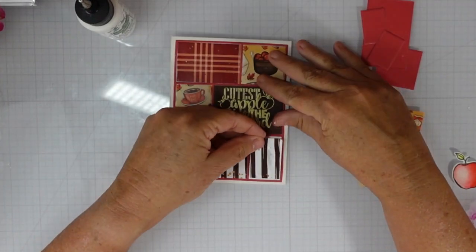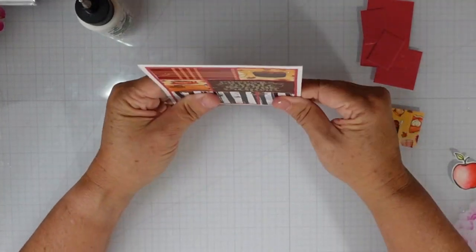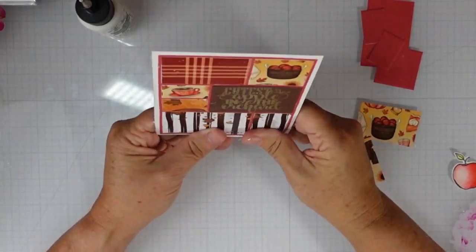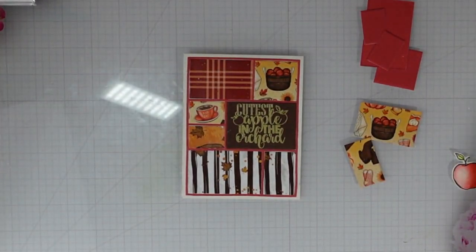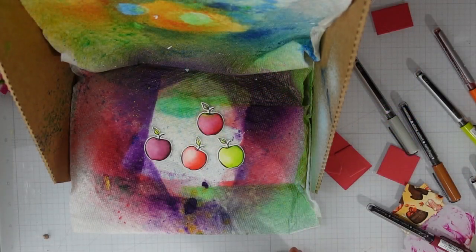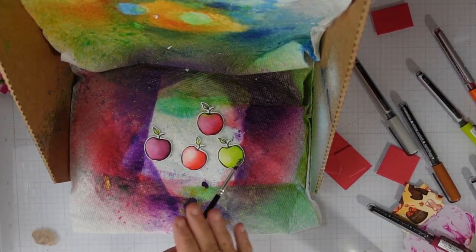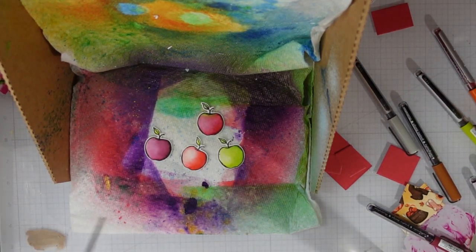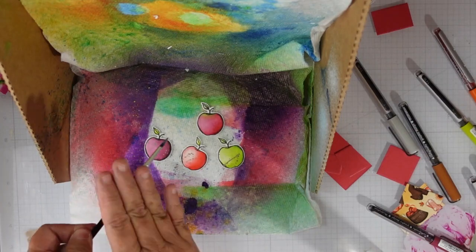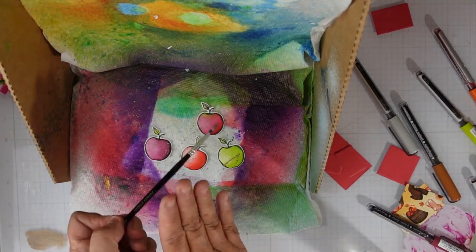So here's where I'm going to add that last piece of pattern paper, and then we're going to start arranging our collage. There's different ways that you could go with this. I could have used a smaller sentiment and added it to one of those smaller areas, but I thought that 'cutest apple in the orchard' just fit this card nicely.